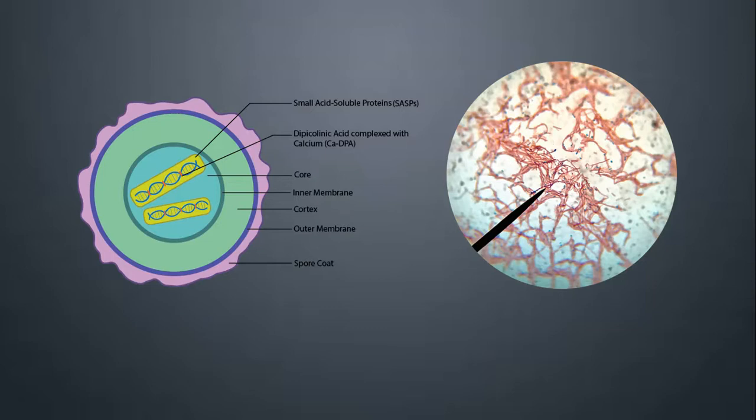In 1922, Dörner first introduced the Endospore Staining Method, which was a very lengthy heating process but resulted in differential staining of endospores and vegetative cells in the same sample. In this process, the endospores and free spores appear in green or blue, or red dye is retained by the vegetative cells.